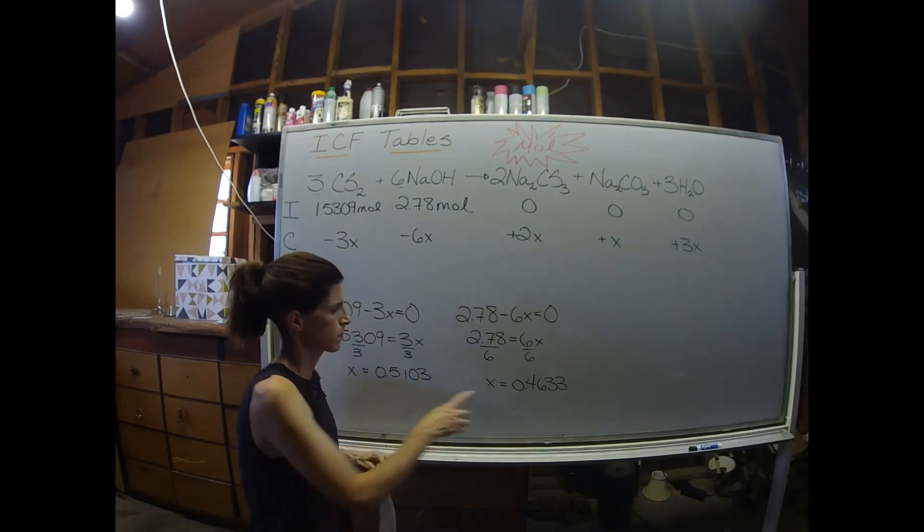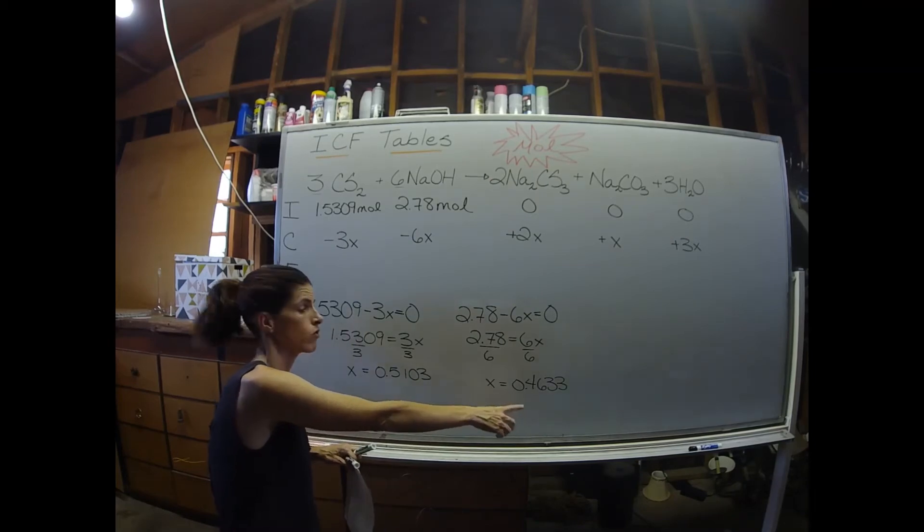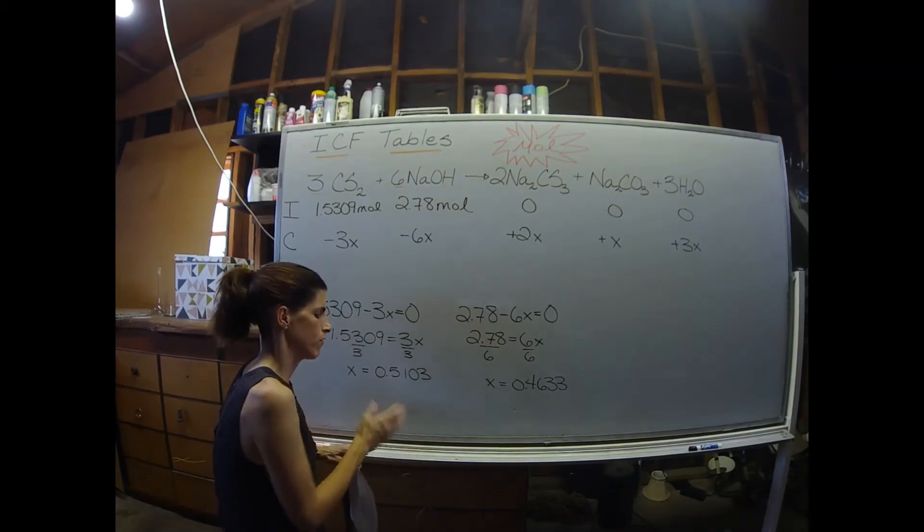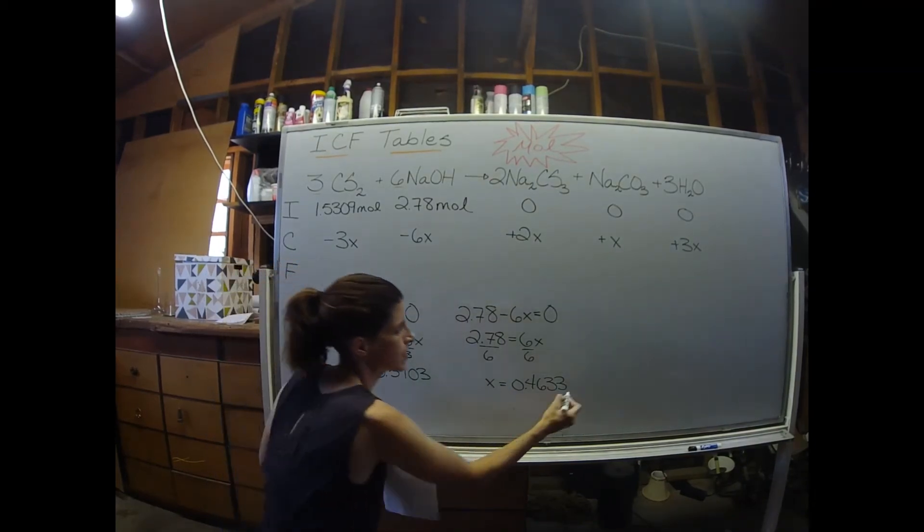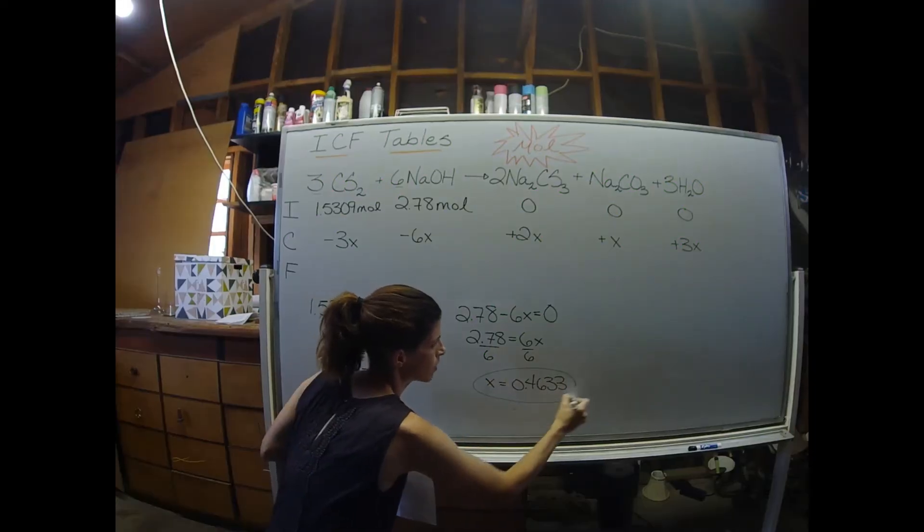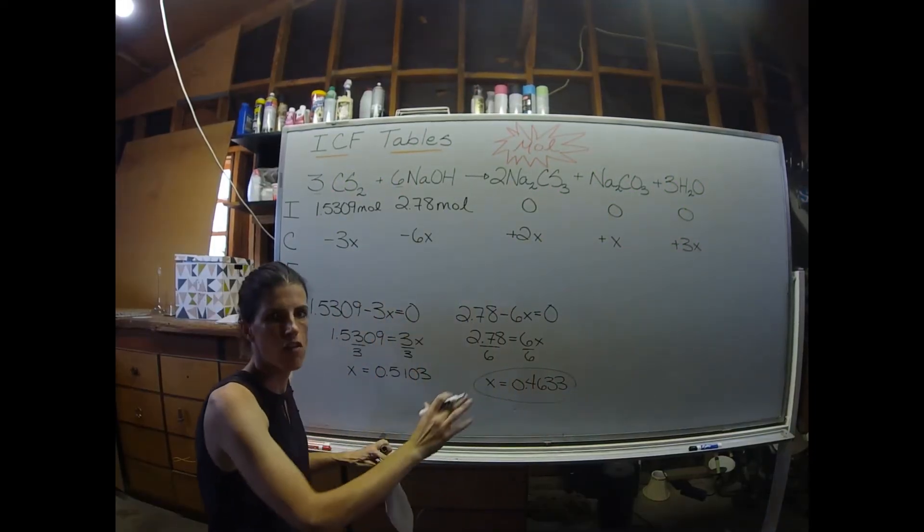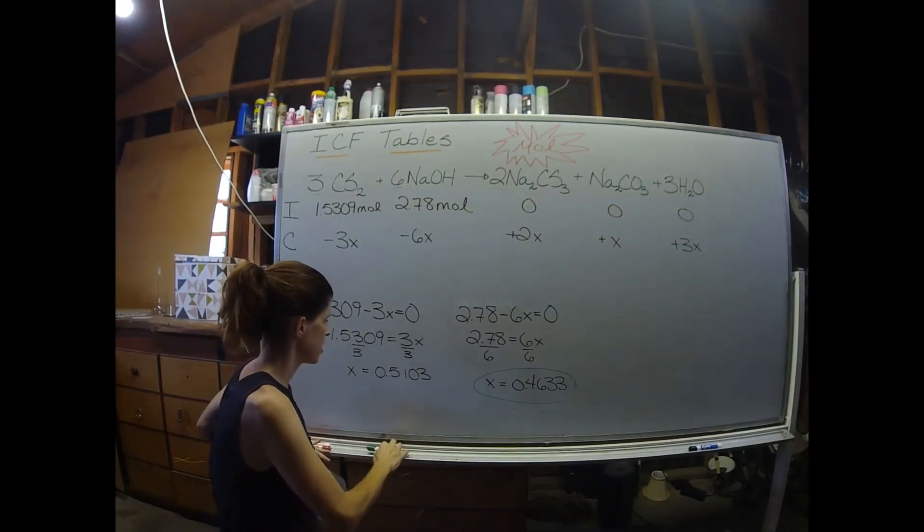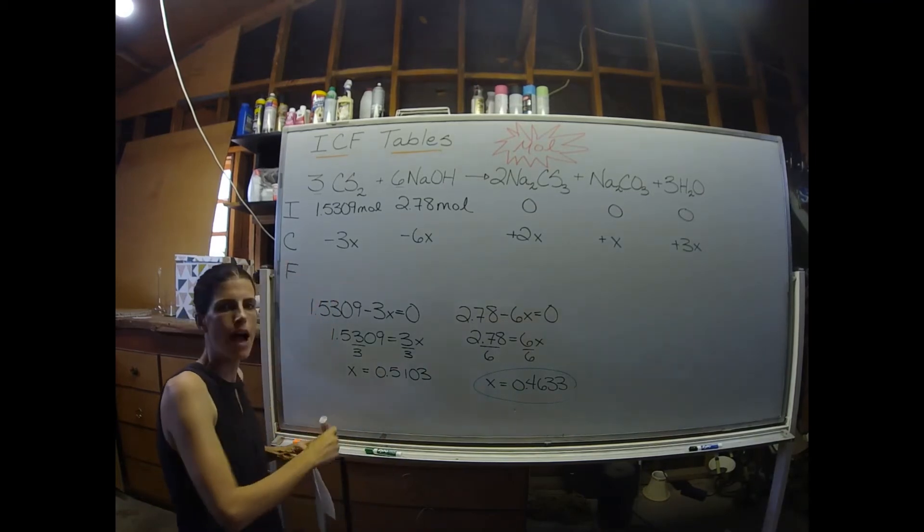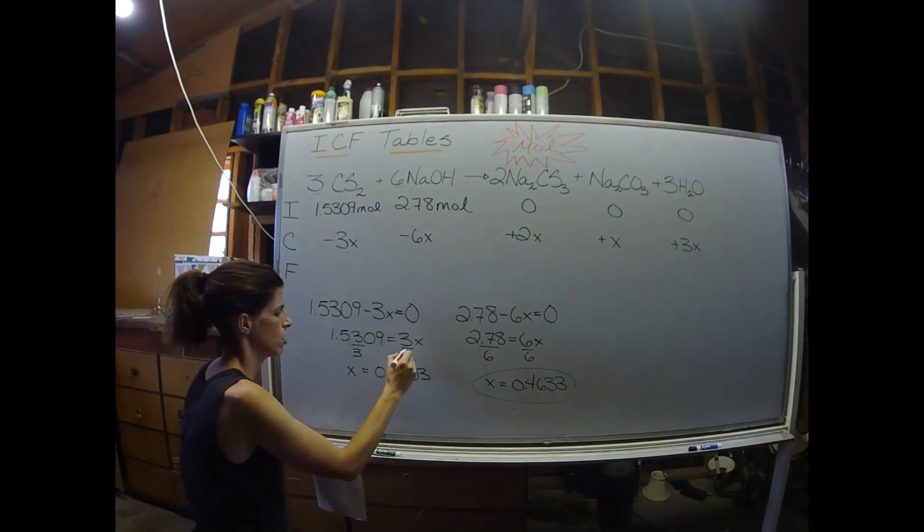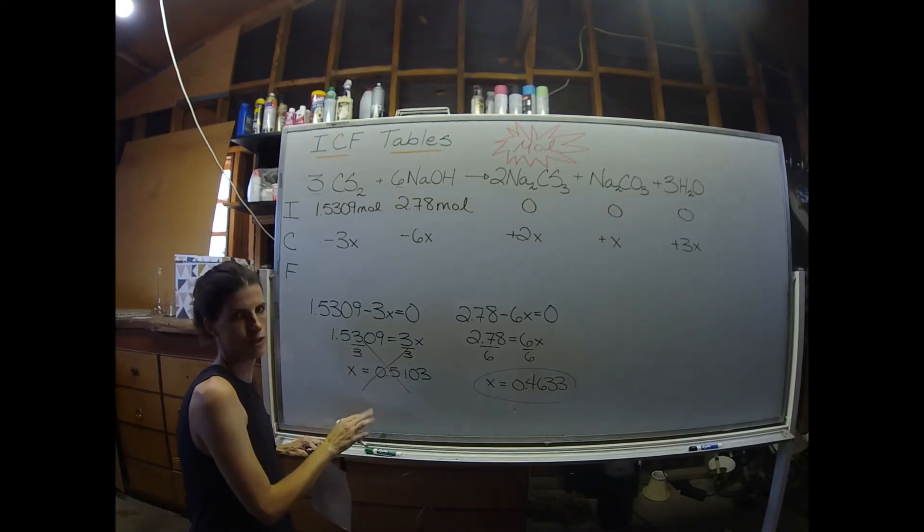So since 0.4633 is smaller than 0.5103, this is the x value that I'm going to use to solve my ICE table. This value, the larger value, is gibberish. So we're going to cross out that larger x value.